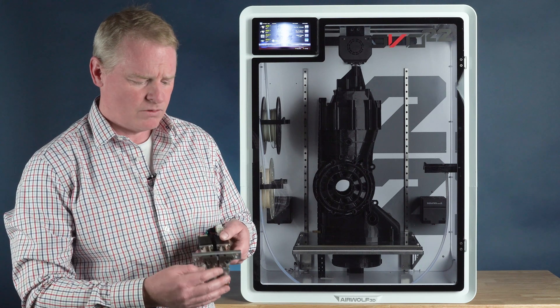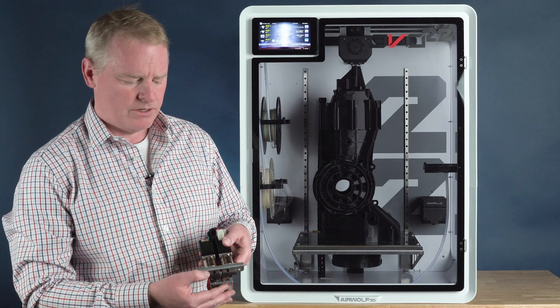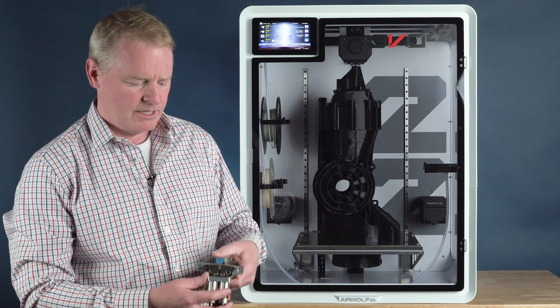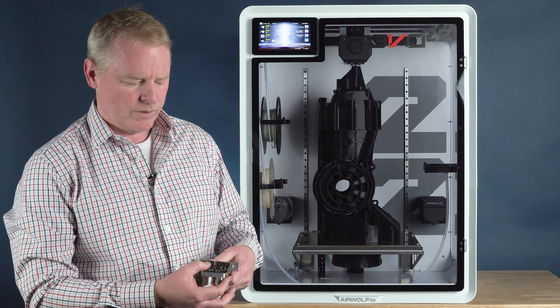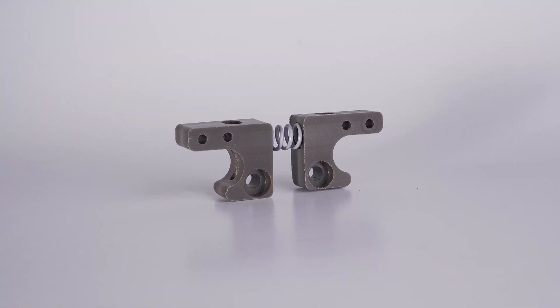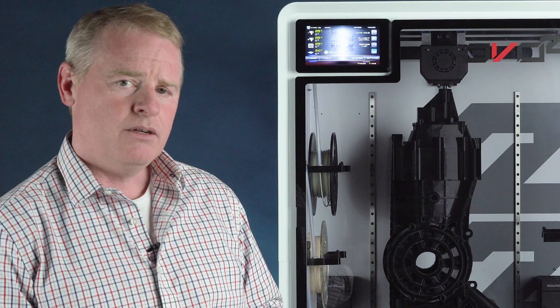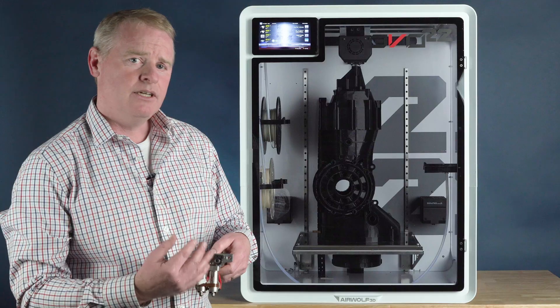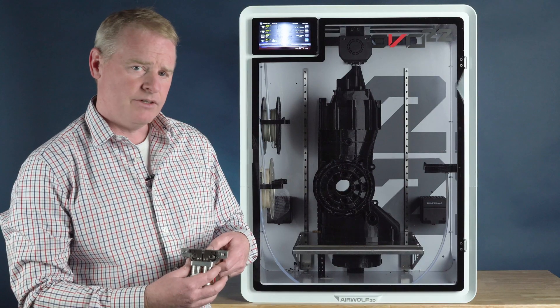Now also with these machined feeders we've created an opening for the filament to smoothly run inside. In this particular example we have Delrin feeders and for most materials the Delrin works very well. We run polycarbonate, ABS, PTG, nylon through these feeders.